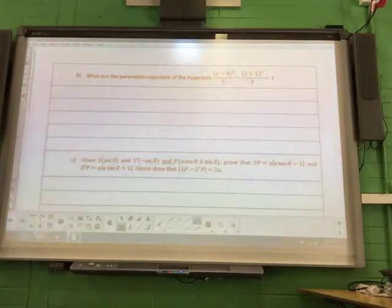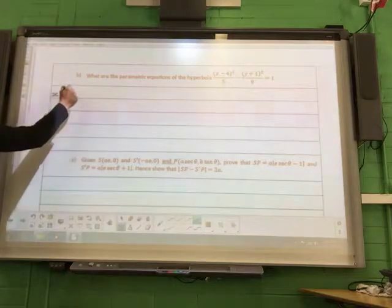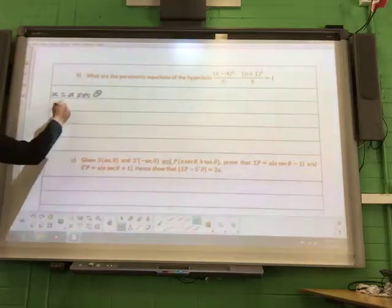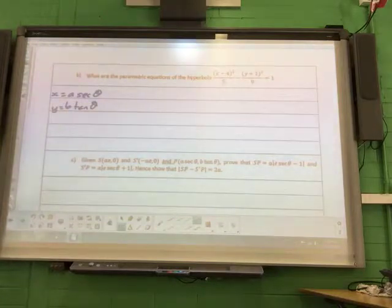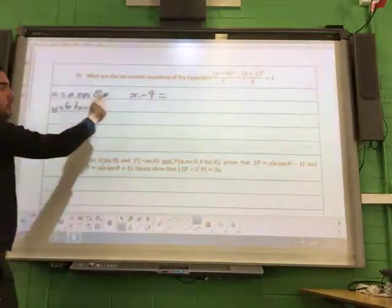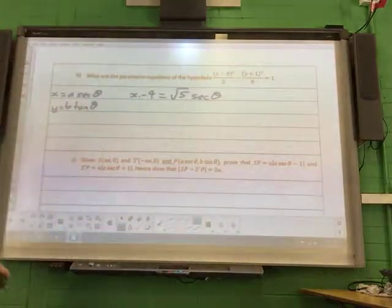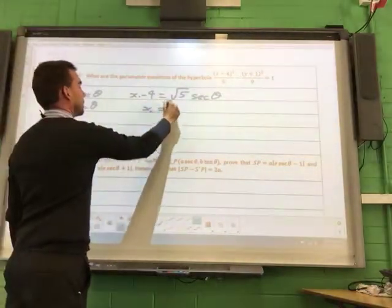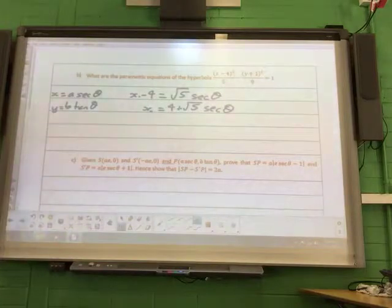We've got a Cartesian equation. Let's write it in parametric form. Normally, x is a sec theta and y is b tan theta. Normally, if it was at the centre. This one we don't have the centre. So we need to incorporate the rest of the value with x into that equation. So x take away 4 is going to be a sec theta. So a squared is 5. So a is going to be root 5, sec theta. That's your parametric equation, the x value.